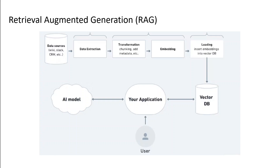RAG, or Retrieval Augmented Generation, is a technique through which we make a model aware of outside data which was not originally part of its dataset. For example, you take a model and you want to train it on your own company's data. This company data was not part of the original training dataset of this model, so you would use this RAG technique to make that model aware of this new dataset.